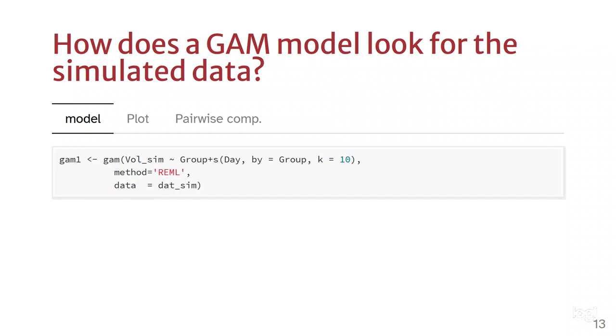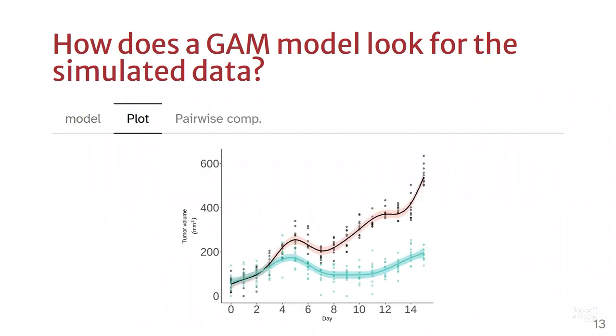If we plot the model and the data, we see that the model is actually following the trend of the data. The model is the lines, so each line is a trend per group, or a smooth that was fitted over time for each group, and it's following the trend of the data. This allows you to have reliable inference from your data.